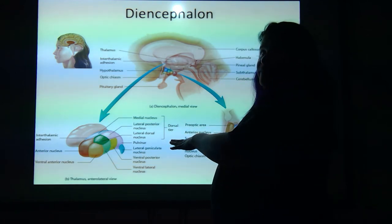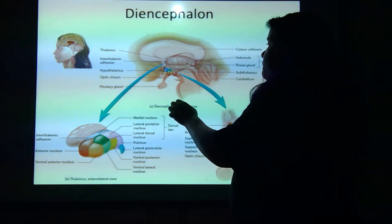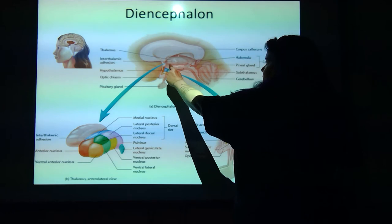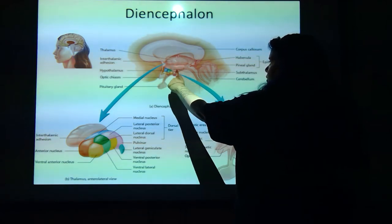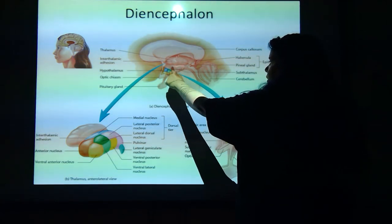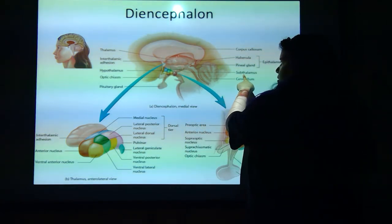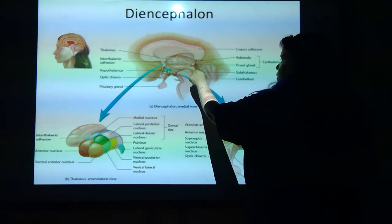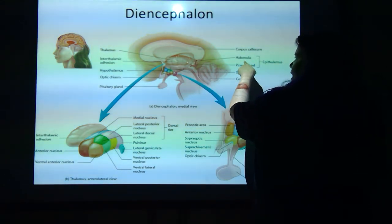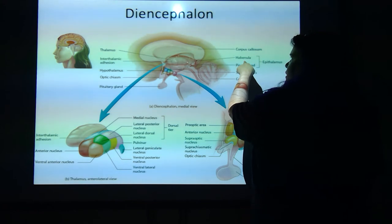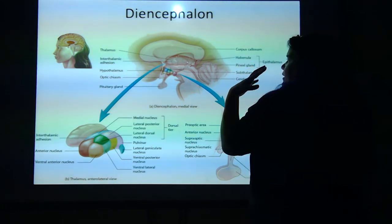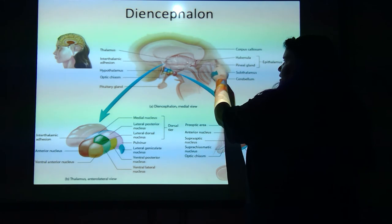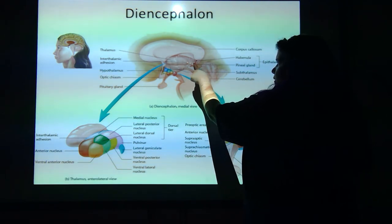Down here, below the thalamus, you have the subthalamus. Back here, you've got the epithalamus with that habenula — the smell-to-memory connection. The pineal gland is right there.